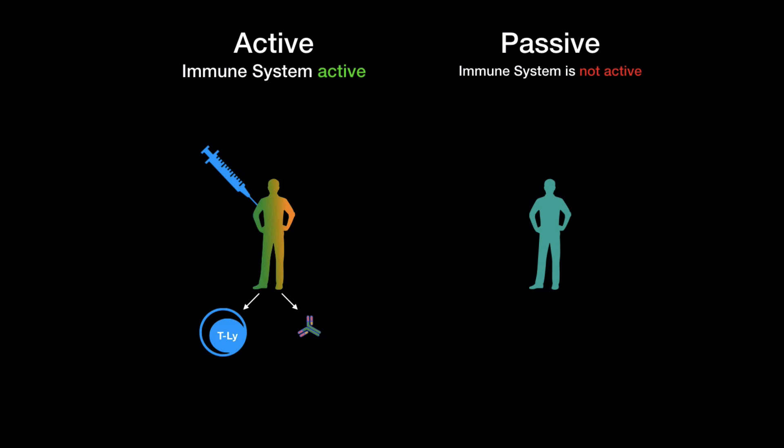Passive immunity on the other hand can also be classified as either natural or artificial. The artificial way is by actually injecting the antibodies into the patient. Usually when a person has been bitten by a snake for example, injecting antibodies against their venom is a quick and effective treatment.